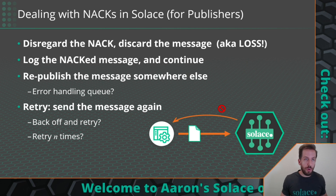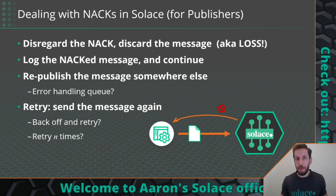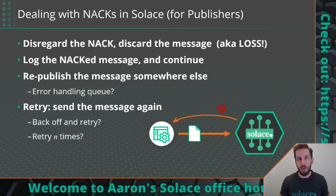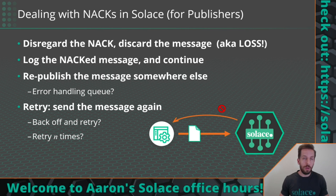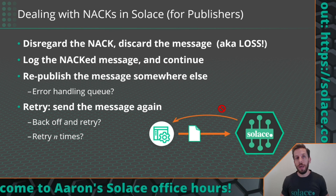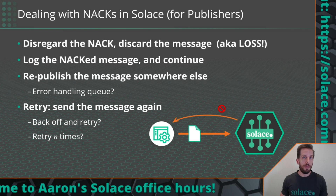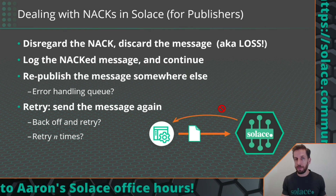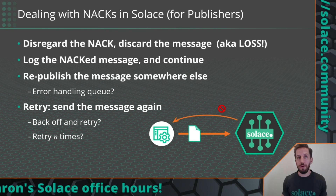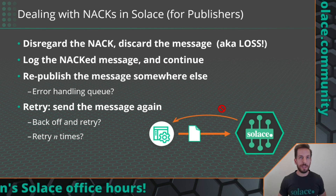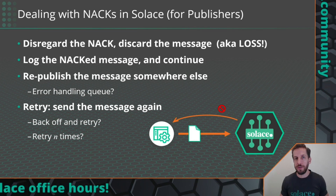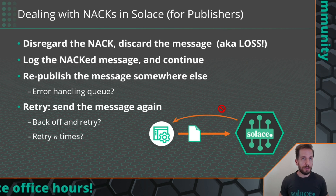Essentially, you either need to try to move forward to get back to a known good state, or perhaps you want to roll back, send some kind of error-handling message to your back-end consumer, or use transactions. There are lots of different choices around guaranteed messaging and how your application wants to deal with failure. Solace — the broker and the API — is not going to implement these strategies for you; it's up to the application design. I hope that was a quick overview of ACKs and NACKs and what to do about them. Come find us on the Solace community if you have further questions, and if you like this video, please give it a like and subscribe to our channel for more.